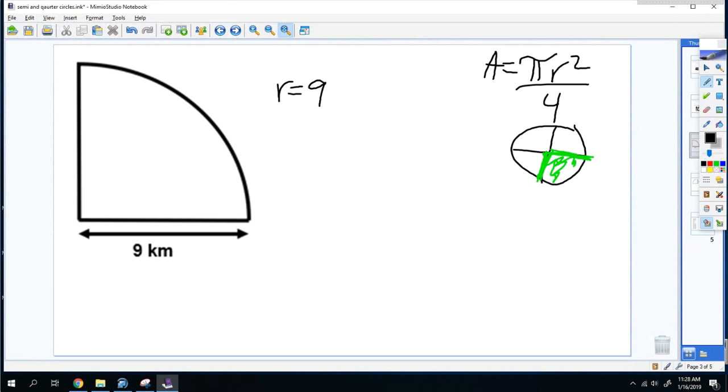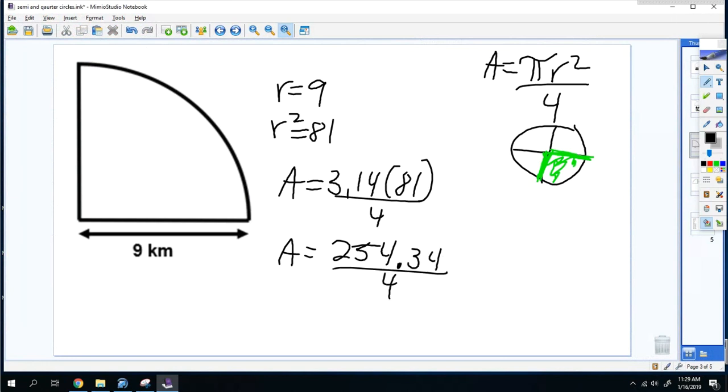So the radius here is 9, so the radius squared is 81. You're plugging it in the formula, so A = 3.14 × 81 ÷ 4 because it's a quarter. So you're going to do 3.14 × 81 first and you get 254.34, then you divide that by 4 and you get 63.585 kilometers squared. That's how you find the area of a quarter circle.